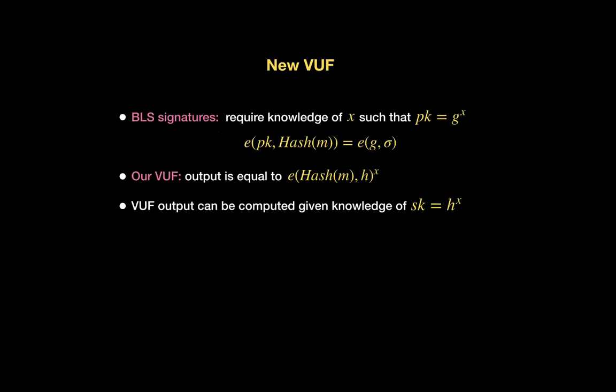The starting point for our VUF was trying to have a BLS signature where the output is in the target group rather than a source group. Our signature does not include any target group elements, but our unique element is that target group element. We then prove that the element will be well-formed when the proofs are put together in the way prescribed in the paper.